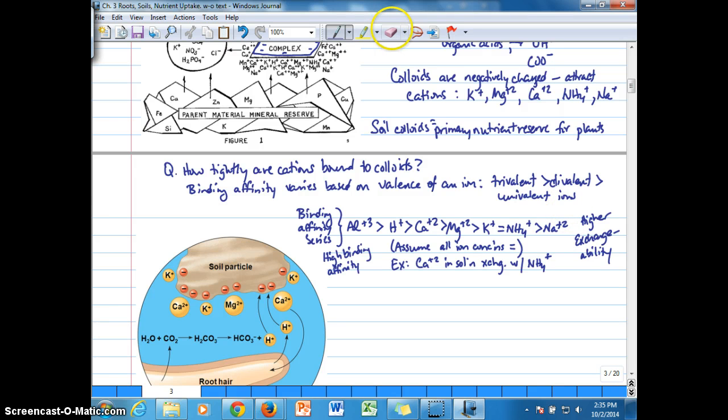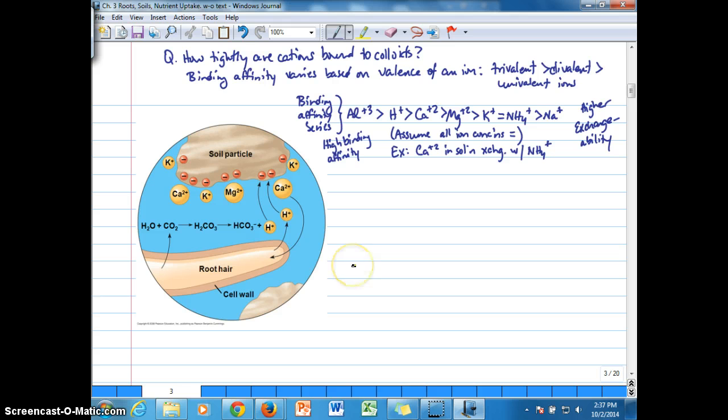Actually, there's a little error here in our series. We want to get rid of that too. It's just a positive one on the sodium. We can also assume higher exchangeability at the low end, where these ions are going to exchange more readily off the colloids than something that's more tightly bound. So we can say that exchangeability of ions runs the reverse of the binding affinity series.